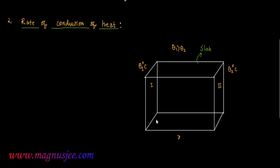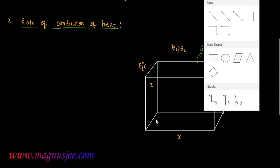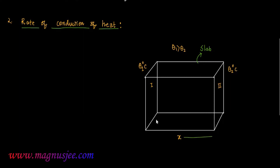The thickness of the slab is x, and the area of cross section of the slab is A. In this case, heat energy will be conducted from the left end to the right end — that is the direction along which heat energy will be conducted.